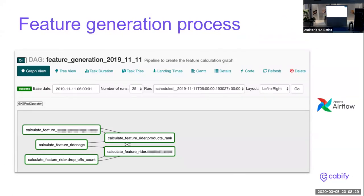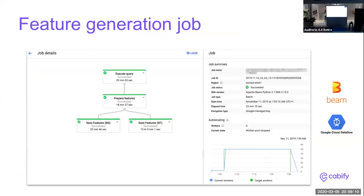Here is a sample of the Airflow generation process, simplified with only five features. This graph is built from the feature manifest, taking into account dependencies between features — you can see two layers where the right layer depends on the left. One feature shown is called rider.product_rank — remember that name, we'll come back to it. Here is a detail of an Apache Beam job running in Google Cloud Dataflow computing a single feature: it extracts data from the data warehouse, prepares the feature by adding metadata, and stores it in both BigQuery and Bigtable.